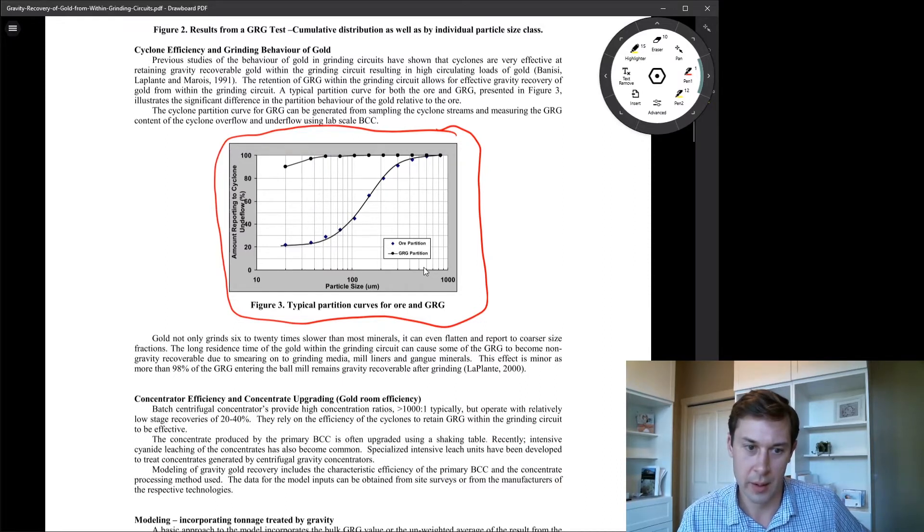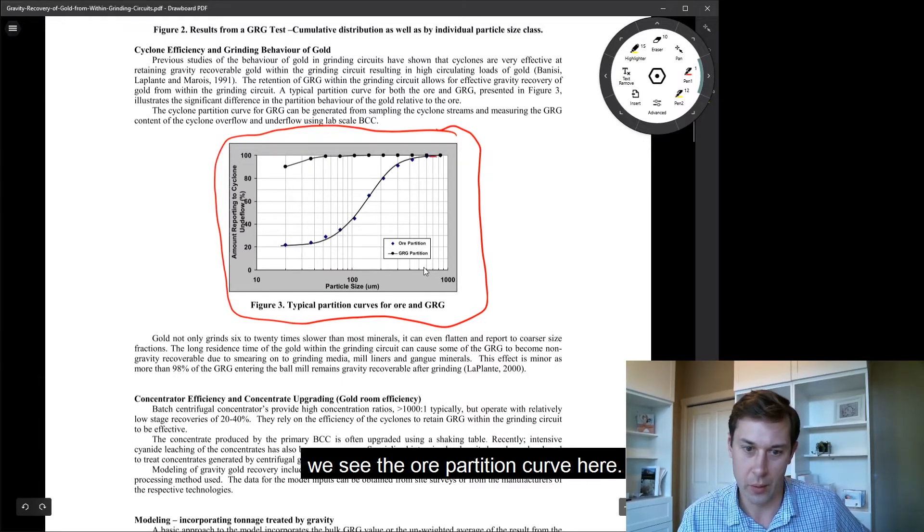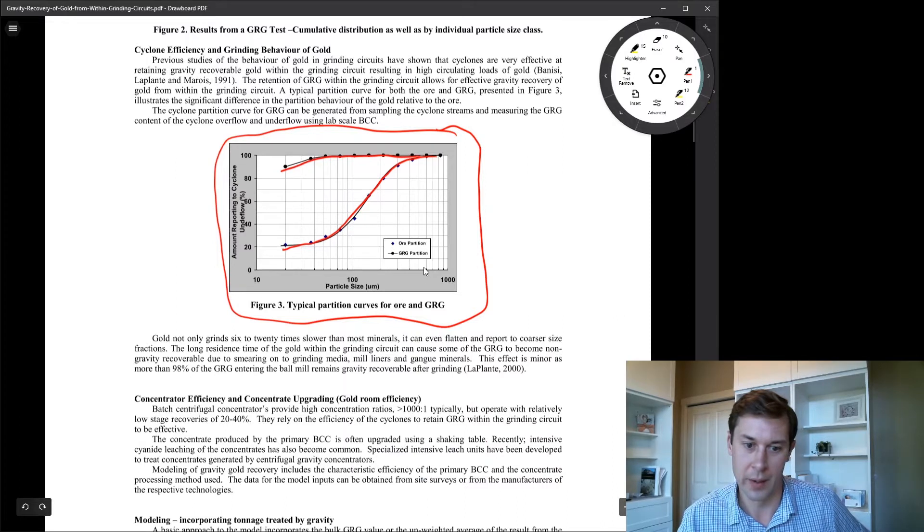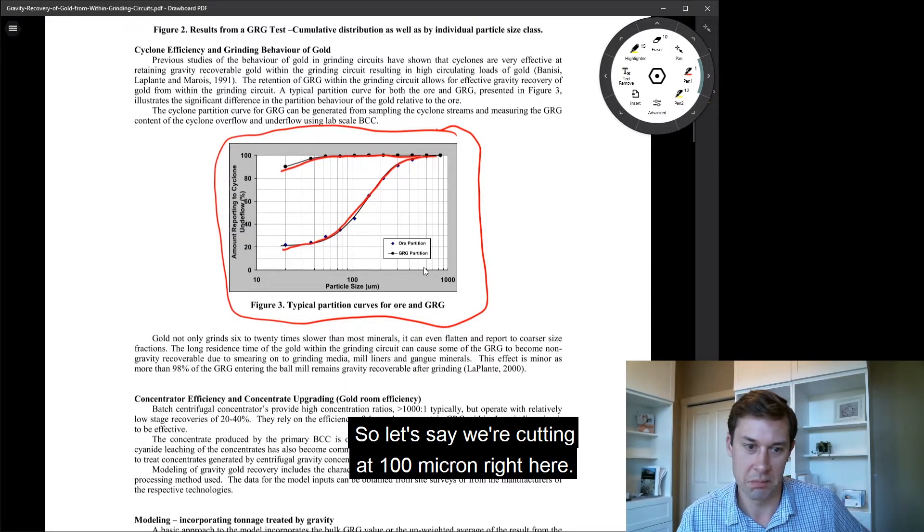So in this case, we see the OR partition curve here and we've got the gold partition curve here. So let's say we're cutting at 100 micron, right here.